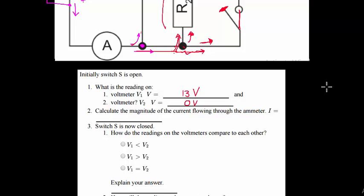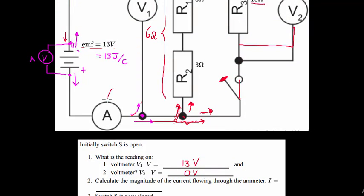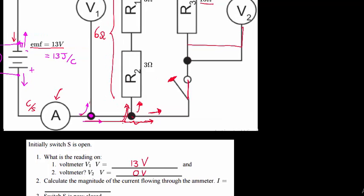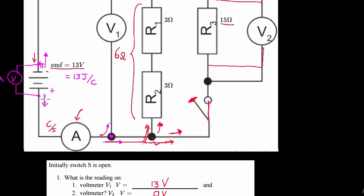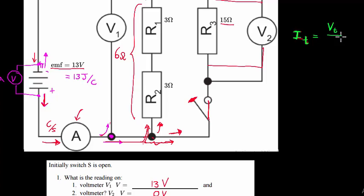Next: calculate the magnitude of the current through the ammeter. The ammeter reads how many coulombs pass per second. All current coming from the battery passes through the ammeter, whether the switch is open or closed. So I need to find the total current, which equals total voltage divided by total resistance.